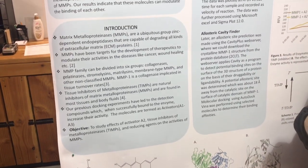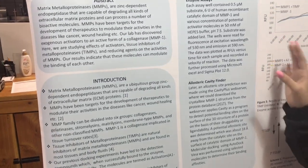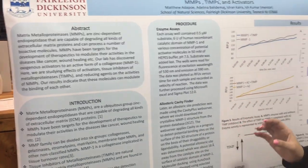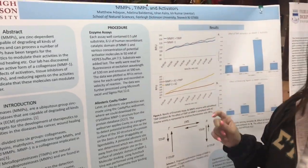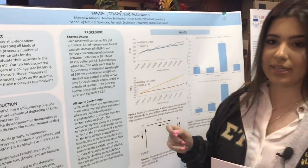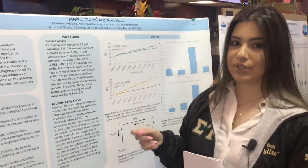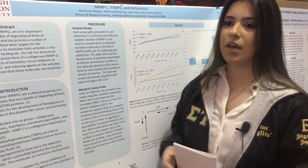There are 23 MMPs found in the human body, but for this experiment we focused on MMP1. MMP1 is a collagenase which helps break down collagen, and this is useful for skin regeneration as well as wound healing.